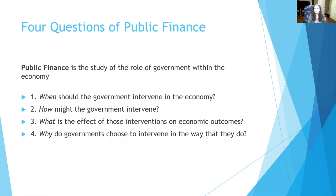When should the government intervene? How might the government intervene? Is this a problem that requires government intervention? If so, how do we do it — do we have a tax, do we start a program, do we hand people cash? What are the effects of these interventions — is it going to end well or badly, are there some people it helps more than others? And why do some governments choose to intervene in the way that they do?